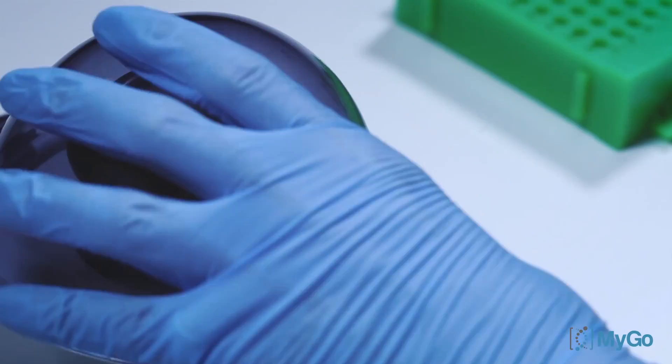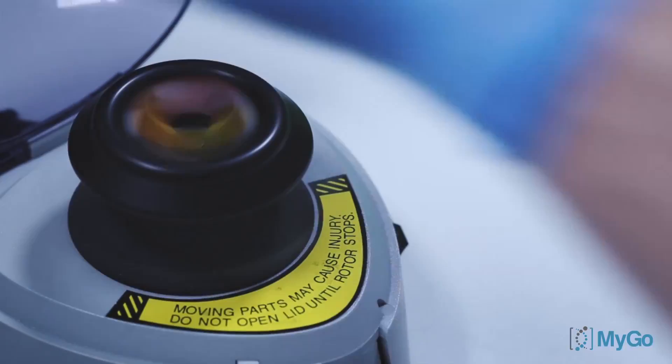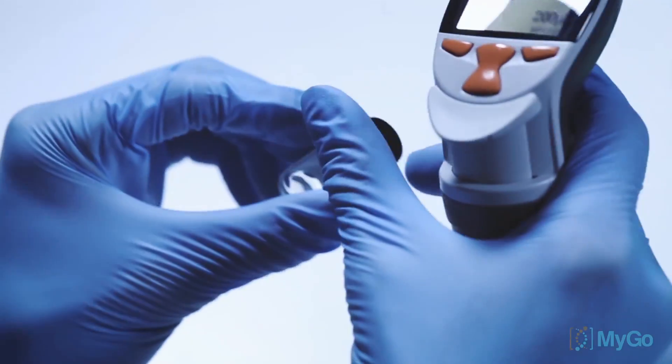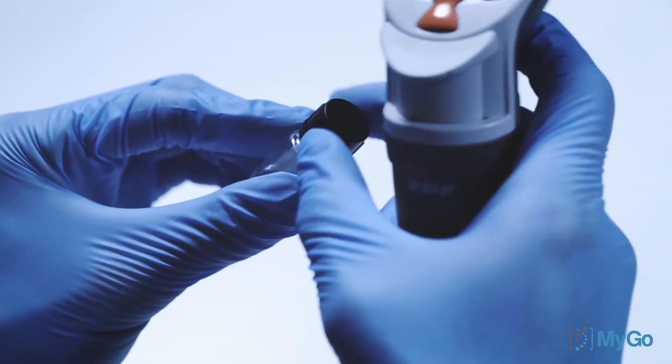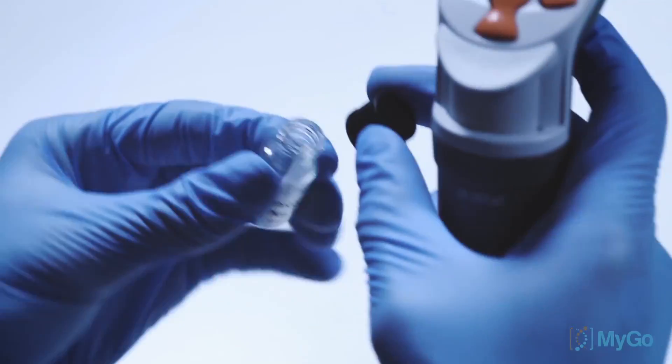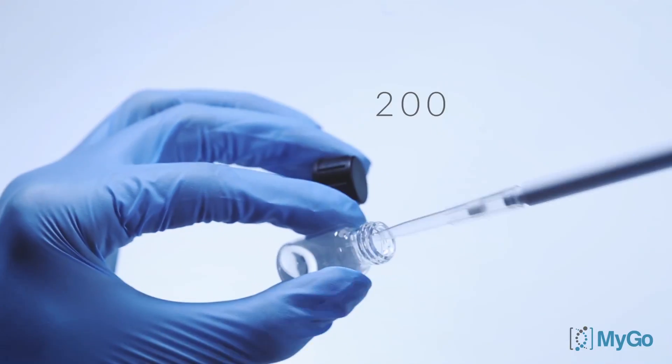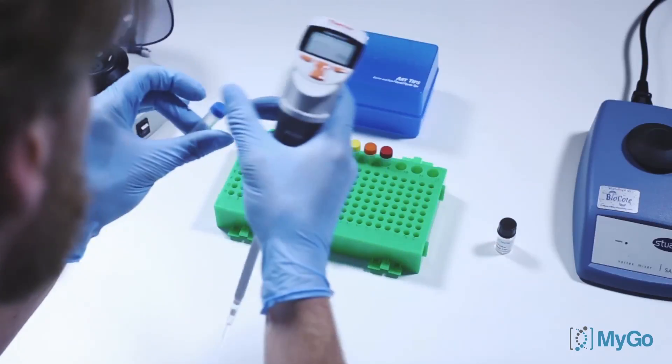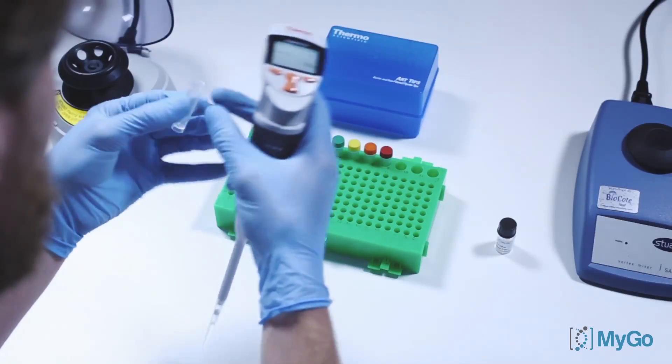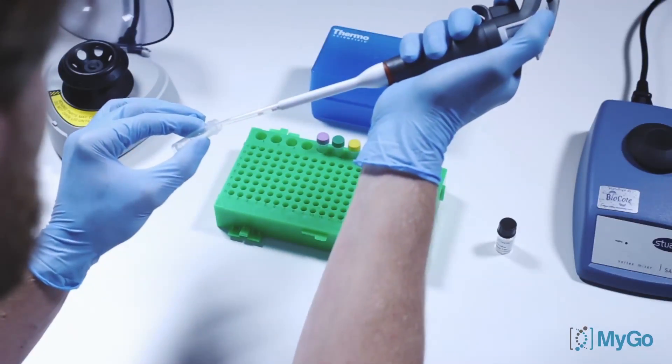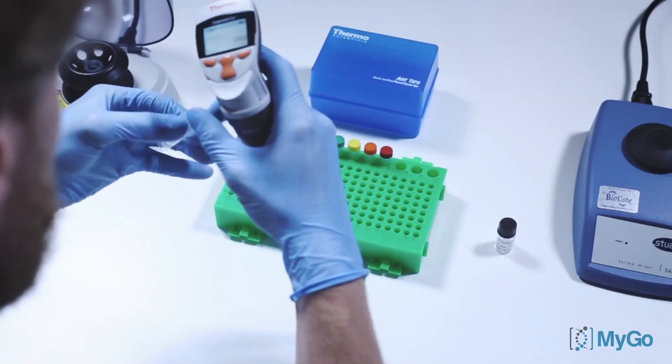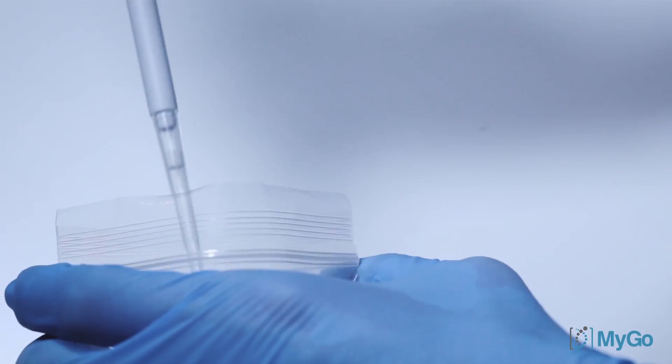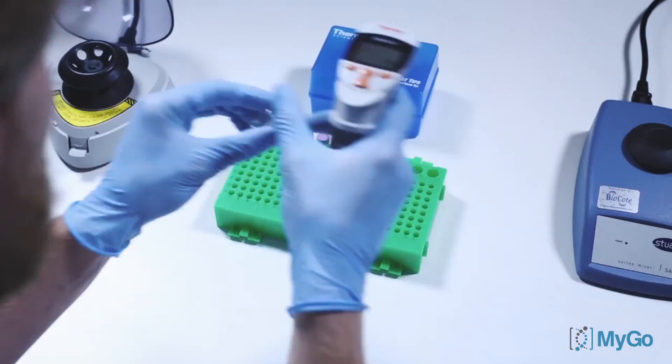Before opening your DNA tubes, spin them down in a centrifuge. This will make sure that all the contents are at the bottom of the tubes. Once spun down, pipette 200 microliters of the MYGO Probe's master into each tube. Make sure that you change your pipette tip for each new DNA tube.